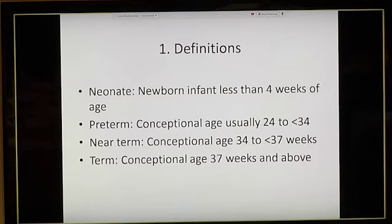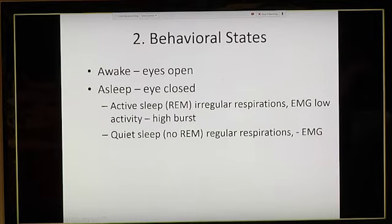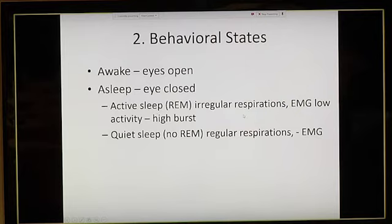The first thing we need to consider is the conceptual age — whether the baby is preterm, near term, or term. We also need to know the behavioral states. Simply seeing that the eyes are open is not always enough, since newborns often have swelling around the eyes. That's why we need extraocular electrodes. In active sleep, respiration becomes irregular and the EMG can be low or high voltage. In quiet sleep, respirations are very regular and the EMG is flat.